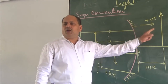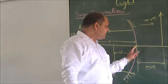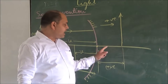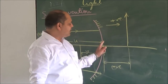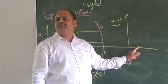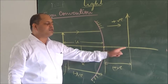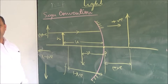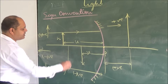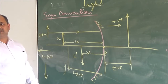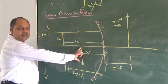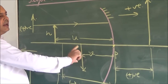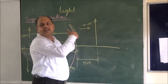When the image is virtual, it is erect and V is positive. So this direction is also positive. The height of the object is H and the height of the image is H dash. In the case of a real image it is negative, and in the case of a virtual image it is positive.